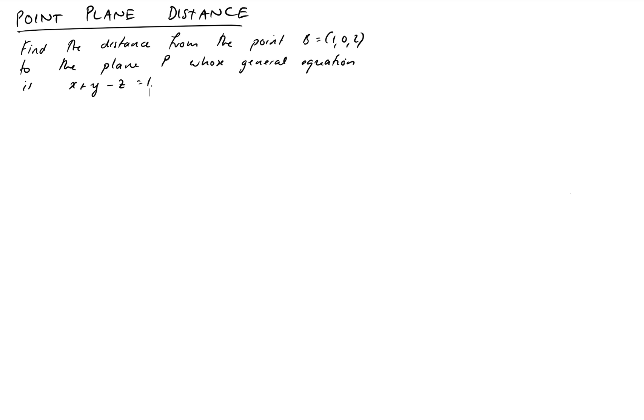In this video we're going to look at another one of these vector problems where we have to find, in this case, the distance from a point to a plane which is given to us in some form. If you see the problem here, we've been given a point B equals 1, 0, 2 and we've been given a plane described using an algebraic equation or the general equation for the plane.